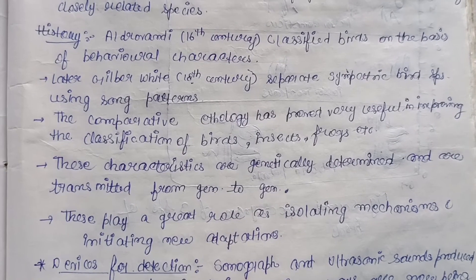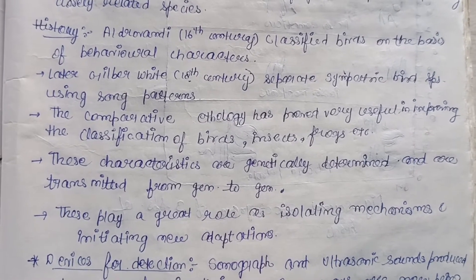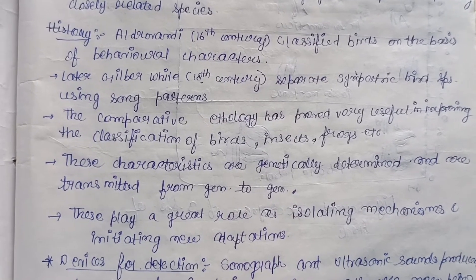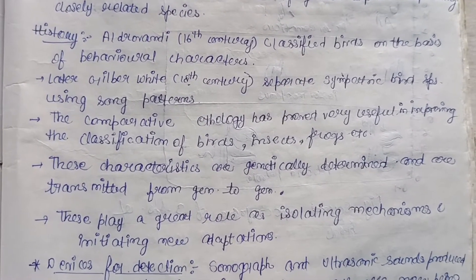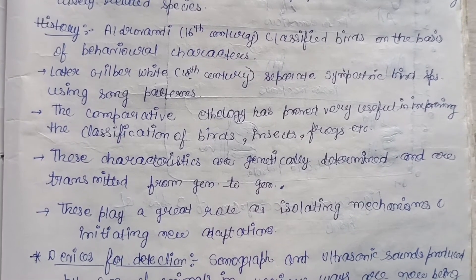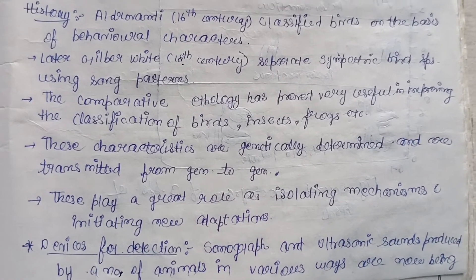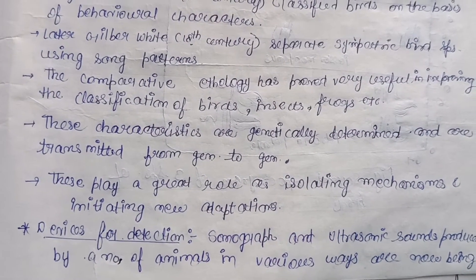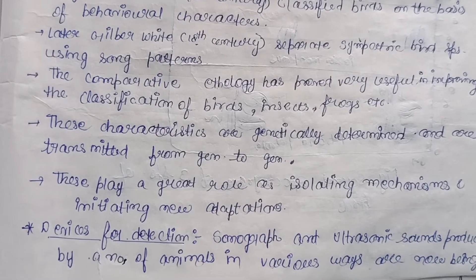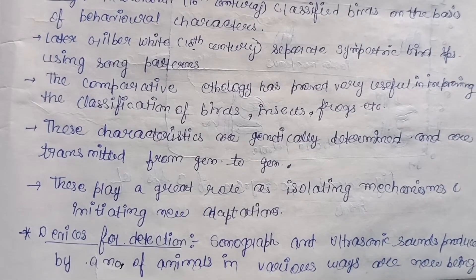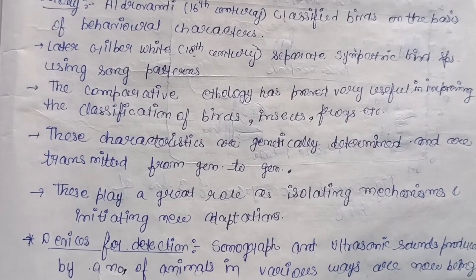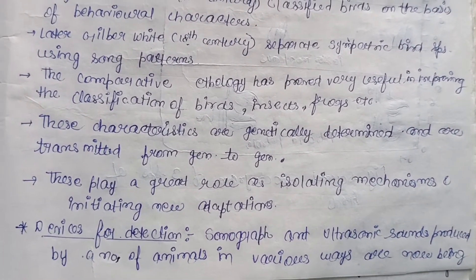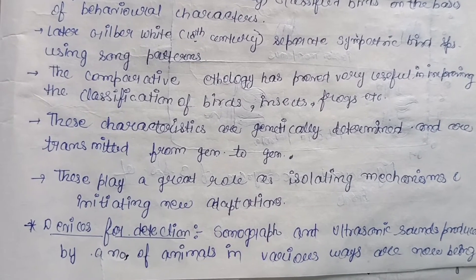Regarding history: Elder Wendy in the 16th century classified birds on the basis of their behavioral characters. Later, Gilbert White in the 18th century separated sympatric bird species using song patterns. Sympatric species are basically those which form a small group of a population and form a new species without any geographic separation.